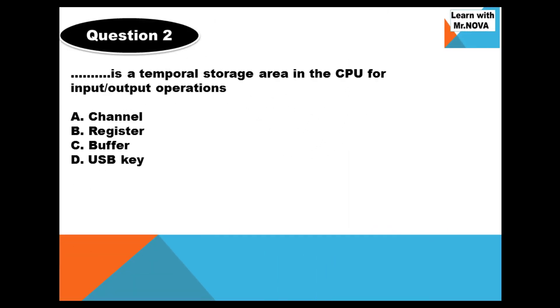Question 2. Blank is a temporal storage area in the central processing unit for inputs to output operations in the computer system. A. Channel, B. Register, C. Buffer, D. USB key. You know the USB stands for the universal serial bus. 5 seconds to answer this question.